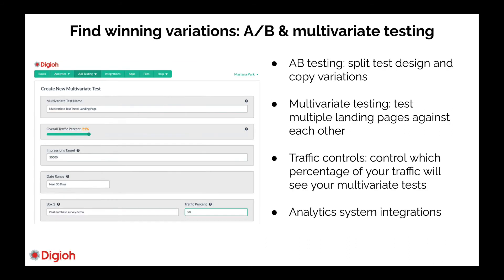We have A/B testing as well as multivariate testing. With A/B testing you can test things like copy and color — a 50/50 split test is really easy in our system. With multivariate testing you can set traffic percentages for more aggressive tests. For example, you might run the original page for 90% of traffic and a 10% split test on an aggressive offer, like a 30% promotion, to make sure it actually moves the needle in terms of ROI.